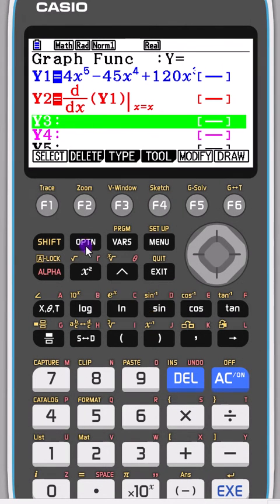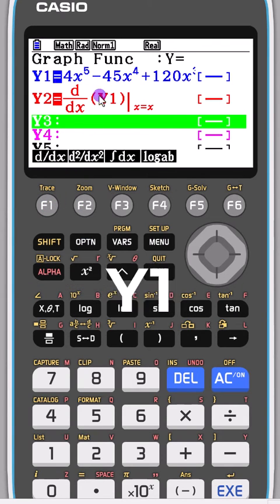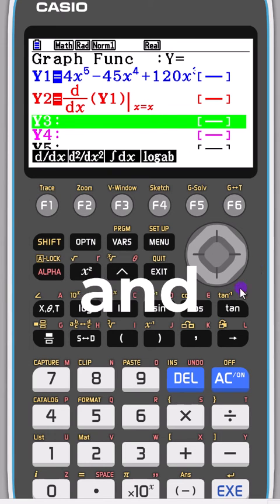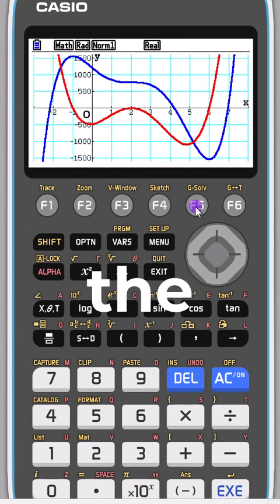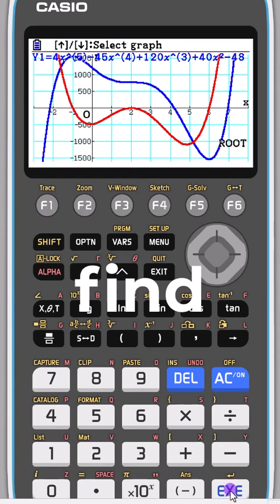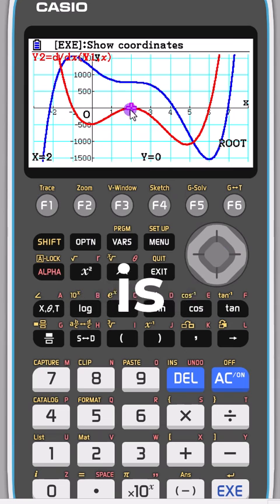To find stationary point of inflection, put your equation in, use the option button to find the calculus, go to calculate, press F1 for dy by dx, put in the y1 value, put x as x, and then you can draw it. You can use the graph solve, find the root, find out the equation you want and go and find any root that you need. This is the one we want and that tells us where the stationary point of inflection is.